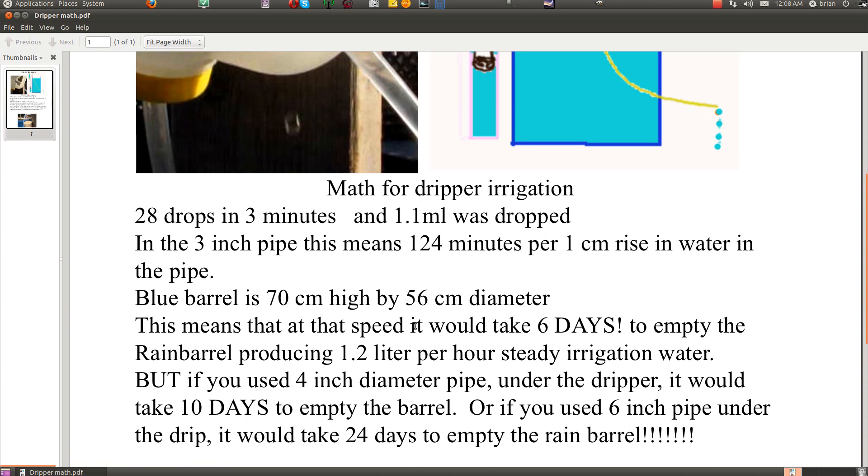And 56 centimeter diameter means you can measure how much per hour you're dripping out on your vegetables or whatever. At this speed it would take 6 days to empty the rain barrel, producing a pretty constant 1.2 liters per hour steady irrigation water.